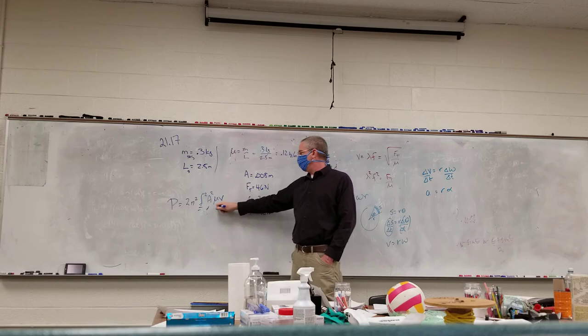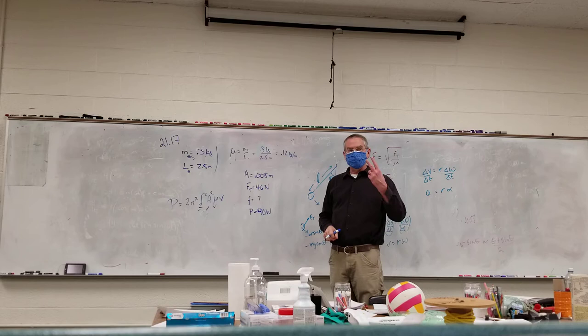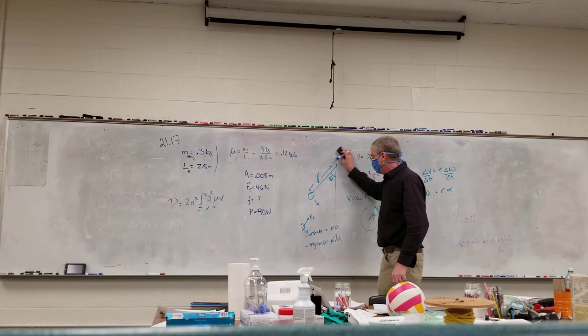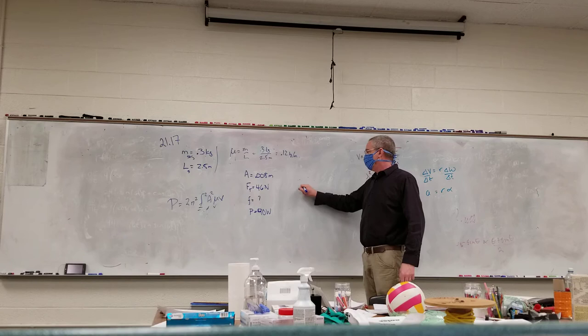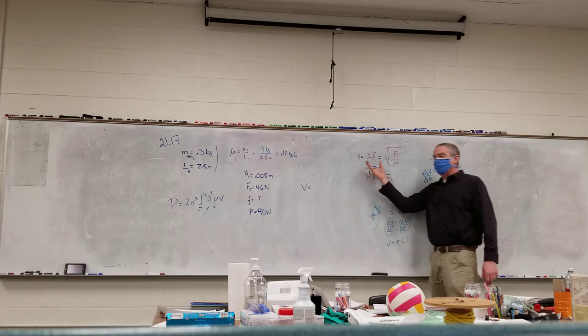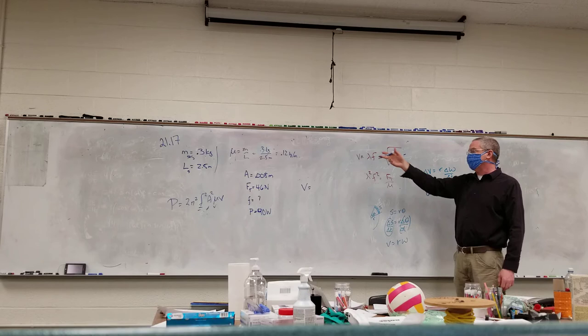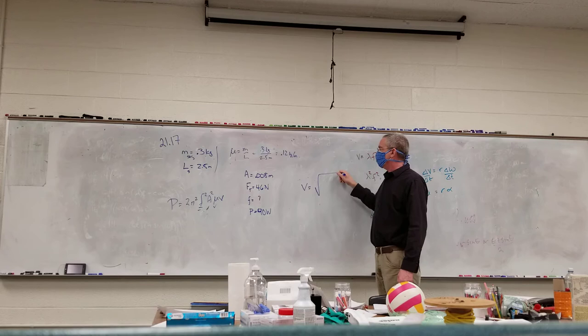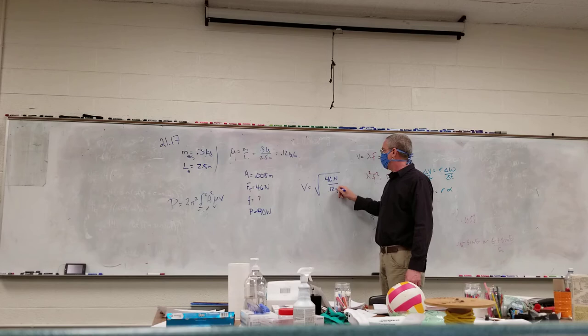I have two formulas for the speed of the wave. Speed is written right here — we know tension, we know linear density now, so we can find the speed. It becomes the square root of 46 newtons divided by 0.12 kilograms per meter, giving 19.6 meters per second.